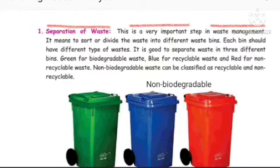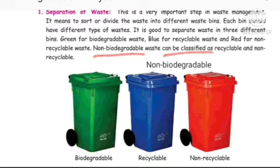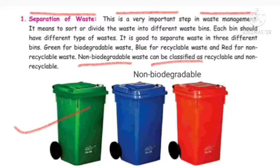Biodegradable waste is very useful to grow our plants and crops. Non-biodegradable waste can be classified into two types: recyclable and non-recyclable. There are trash bins shown here to help us understand easily how we have to separate our waste. We have to throw our waste according to its nature — for example, biodegradable waste includes vegetable peels, dead bodies of animals and human beings, trees, etc.